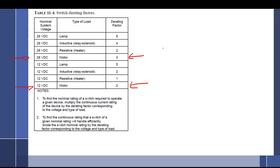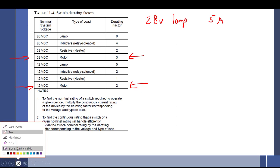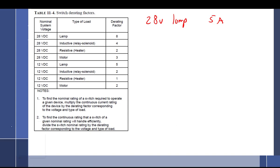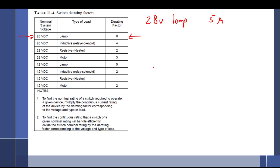So I'm derated by a factor of 3 for 28 volt and factor of 2. Example: I have a 28 volt lamp that draws 5 amps. So what am I going to look for here? 28 volt lamp - I got a derating factor of 8. So basically I just multiply that times 8, and I come up with 40. So I should be looking for a 40 amp switch.